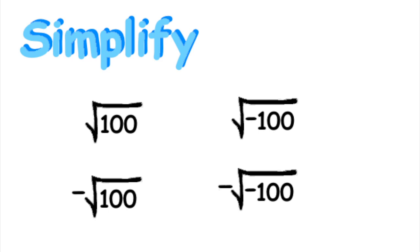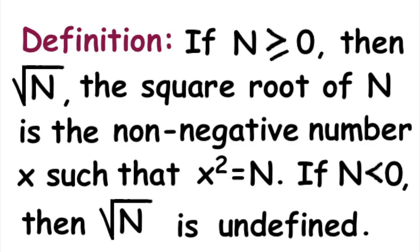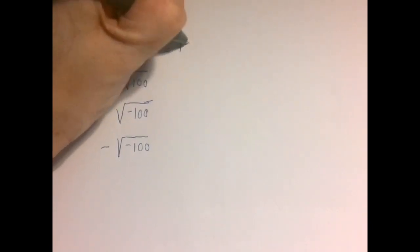We have four expressions that we need to simplify. The first one is square root of 100. Square root of 100 should be a number that squares to 100. There are two such numbers: 10 and negative 10. The square root is defined to be the positive one, so square root of 100 is 10.